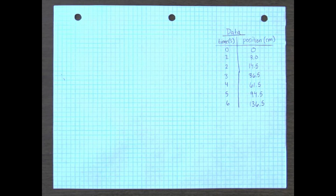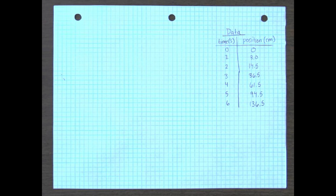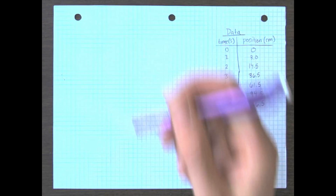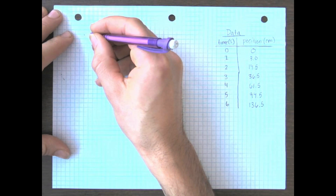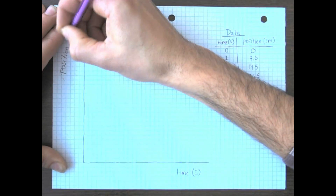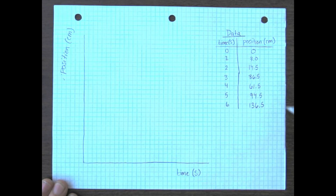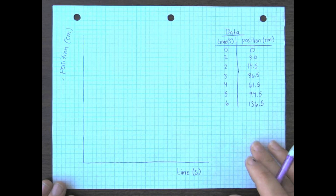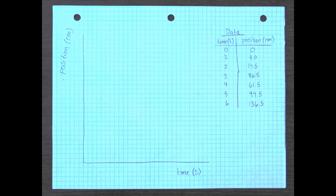After we get some data, our next step is to make a graph. We're going to plot this position versus time graph just as we did in the last chapter. We'll put time on our x-axis and position on our y-axis. I've got my data table copied down, and now we've got to scale our axes. On the x-axis we need to scale out six seconds.